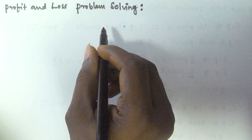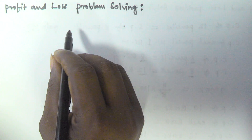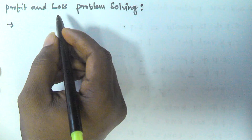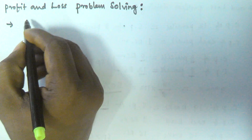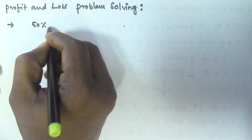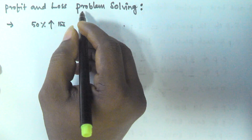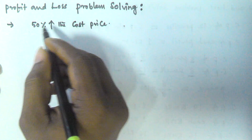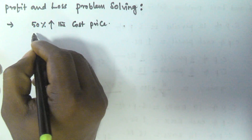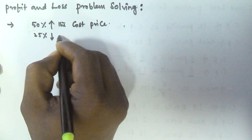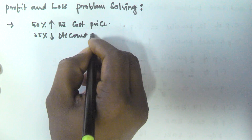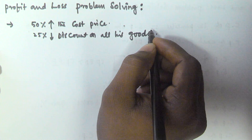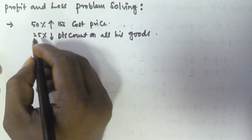Hello friends, in this video we will see some more complex problems related to profit and loss. Let us assume a retailer marks all his goods at 50 percentage above the cost price, and then he gives 25 percentage discount on all his goods. So what is his actual profit percentage?